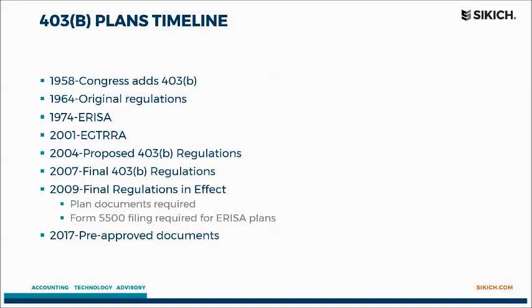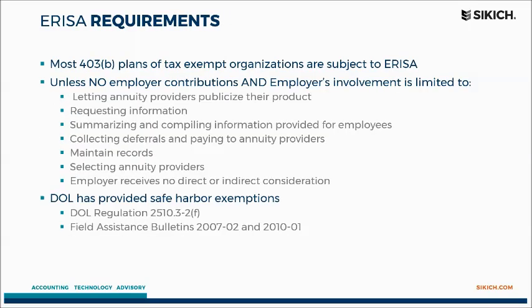In 2009, plan document requirements kicked in and audits started being imposed for larger plans accompanying 5500 filings. Fast-forwarding to today, it took the IRS from 2009 all the way to 2017 to produce pre-approved documents. We've been in a sort of holding pattern — a remedial amendment period — where the IRS gives not-for-profit plan sponsors an opportunity to do the best they can. Now that these new documents are going to be out, it's important to start updating things to make sure we're meeting everything on a go-forward basis.